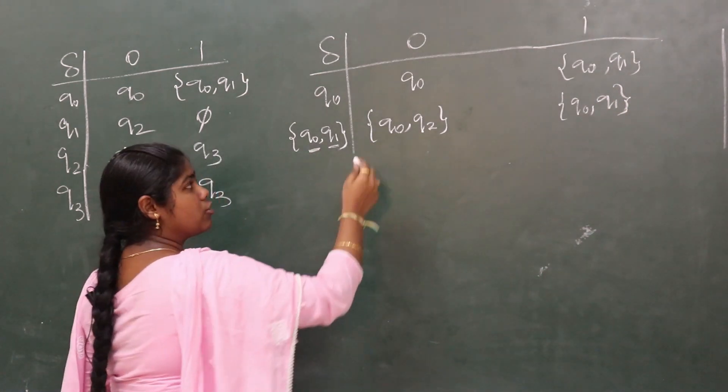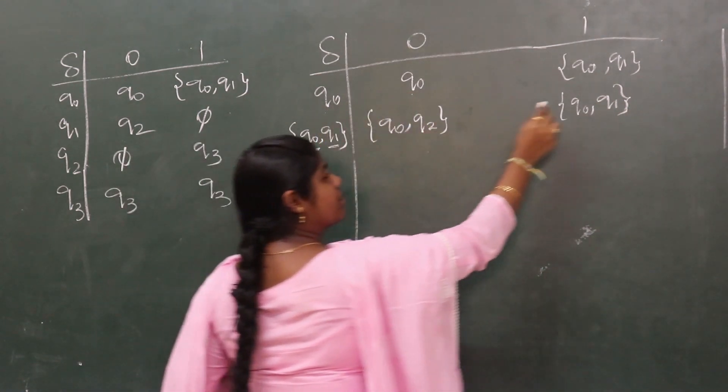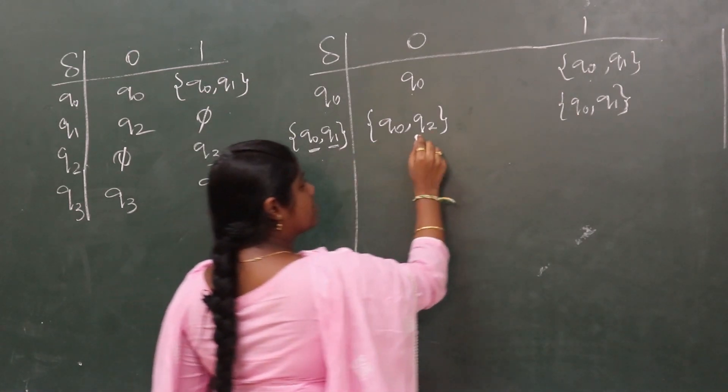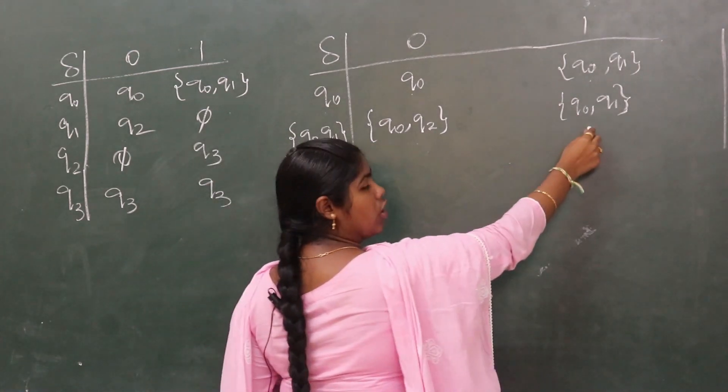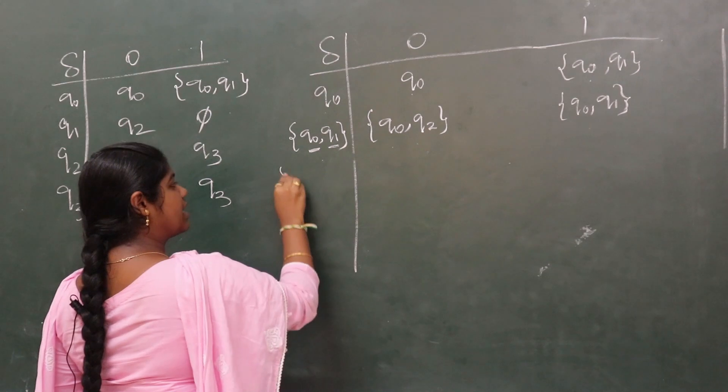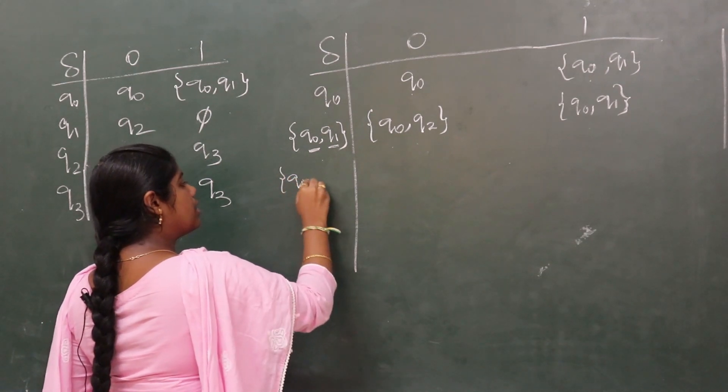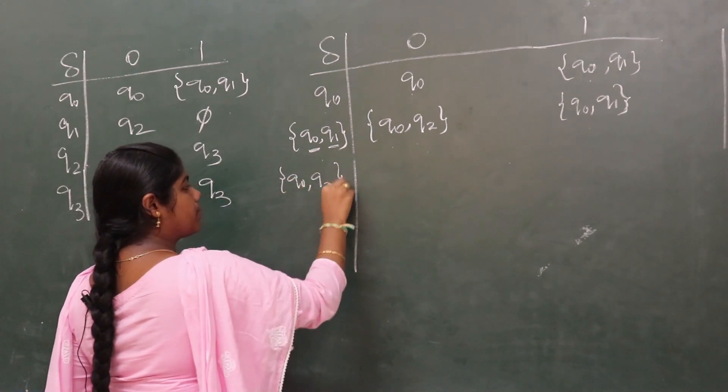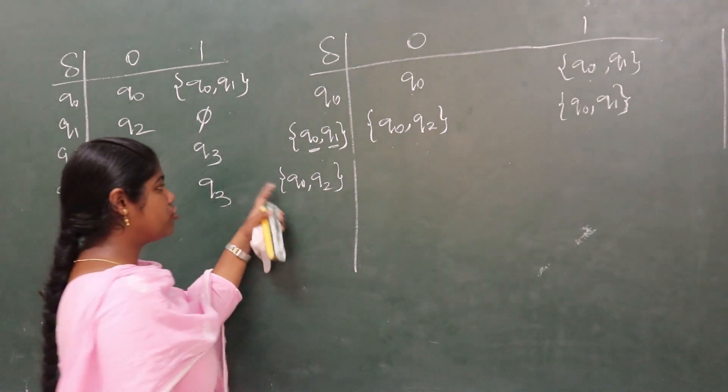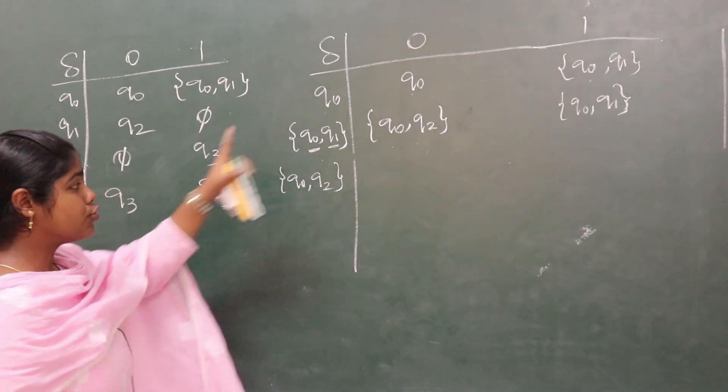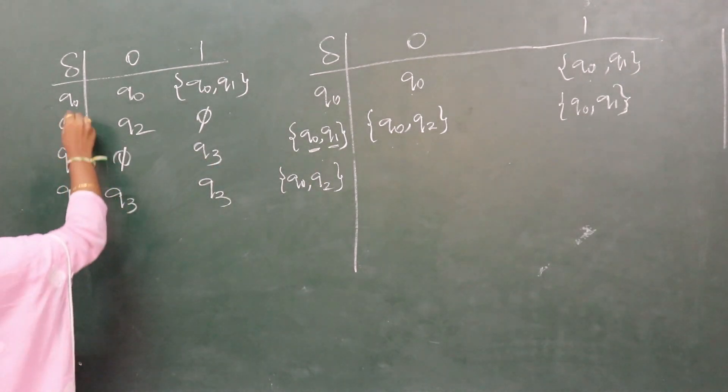Now we need to check if there are any new states. q0 is repeated, q0, q1 is repeated. We wrote q0, q2, which is a new state.